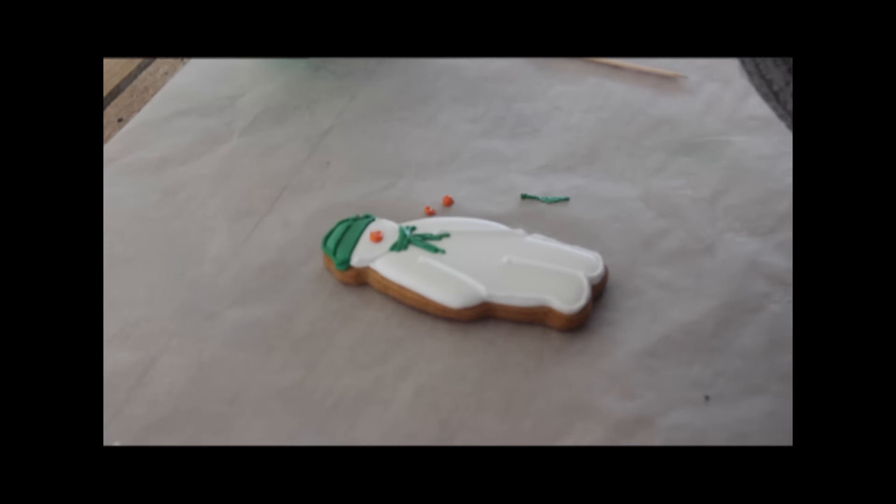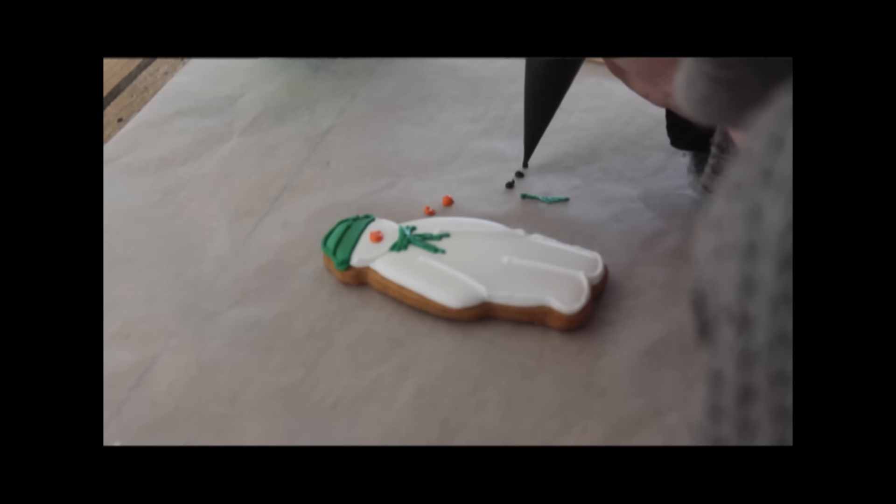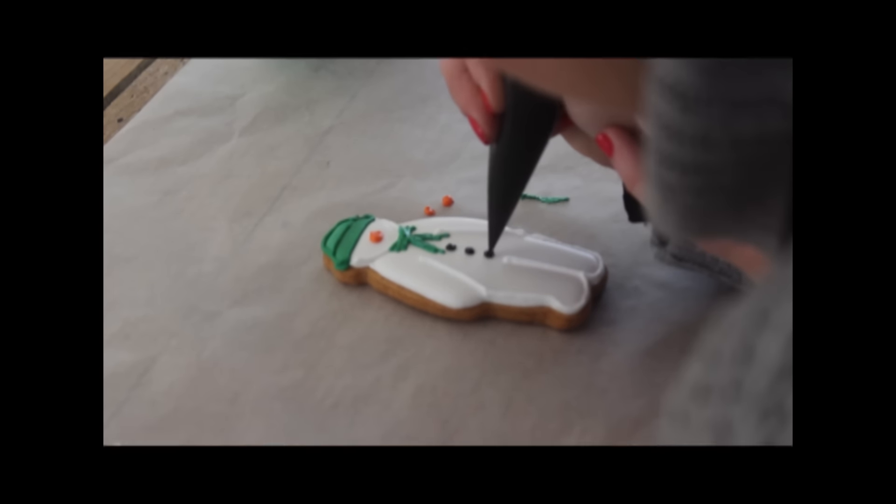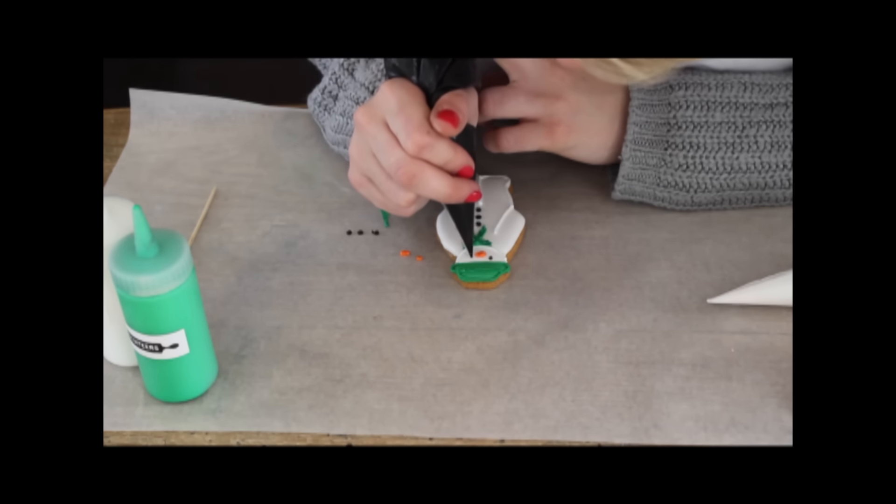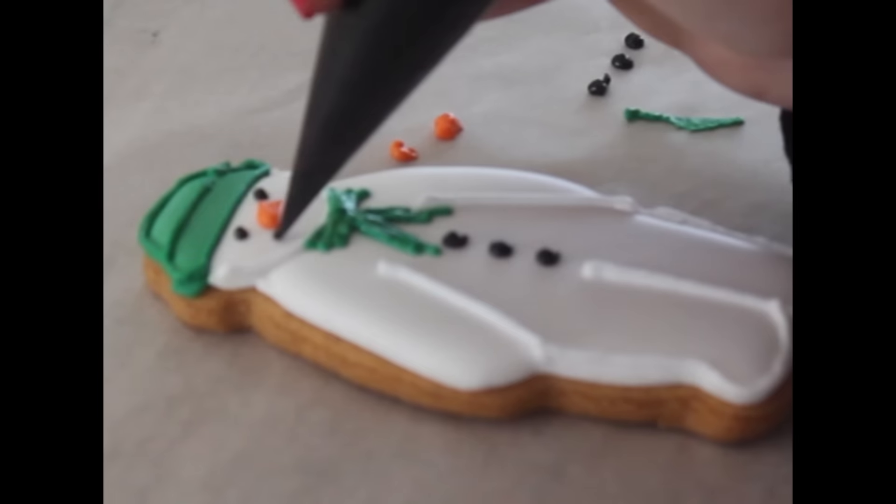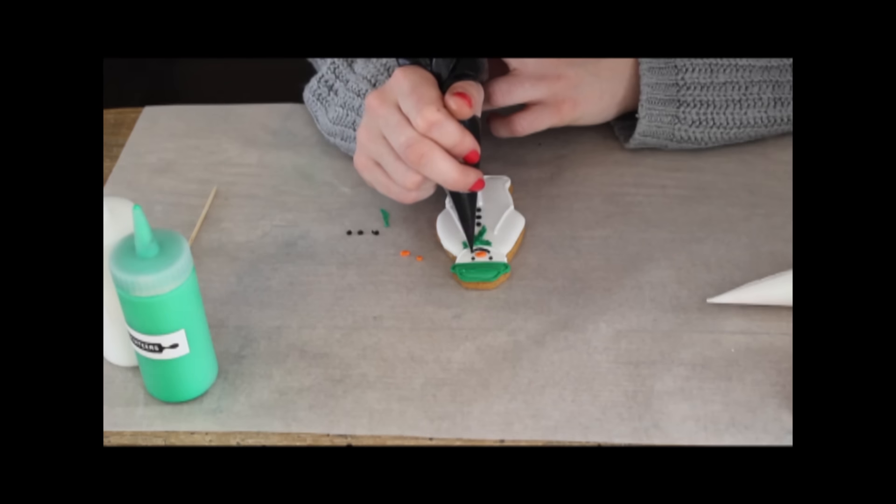Then you just want to go in lastly with your black line icing. Just practice doing some little blobs by squeezing down on the bag and sort of leaving it in the icing until you've got a nice perfect dot. Give him three buttons and give him some eyes and a nice smile like that.